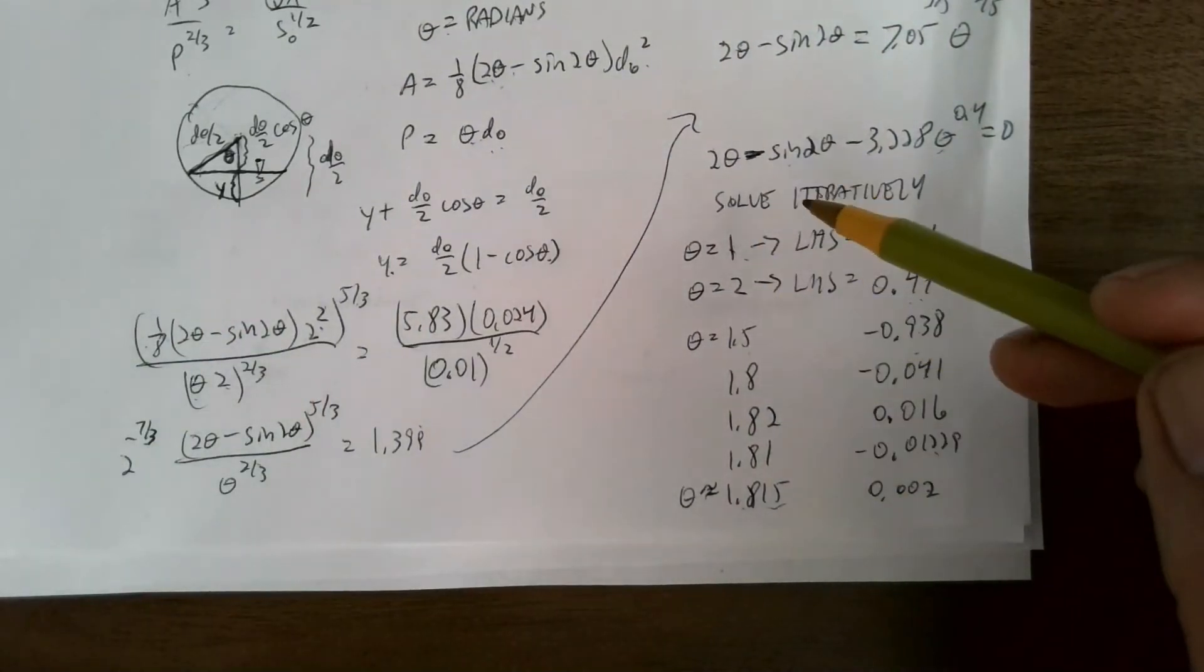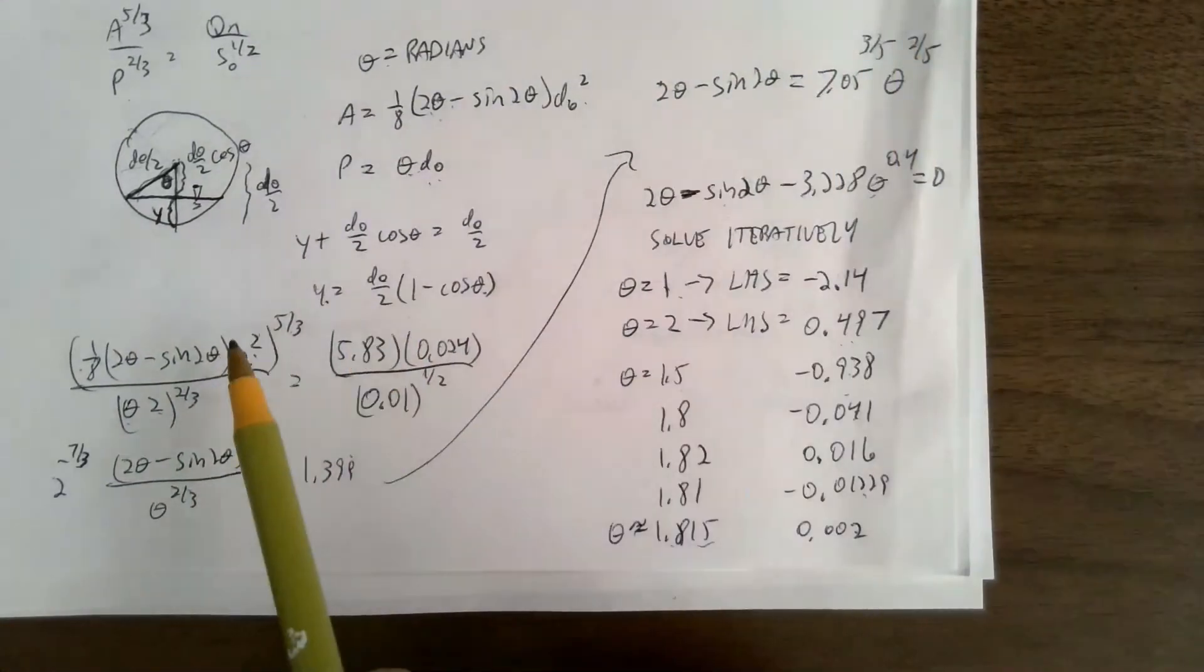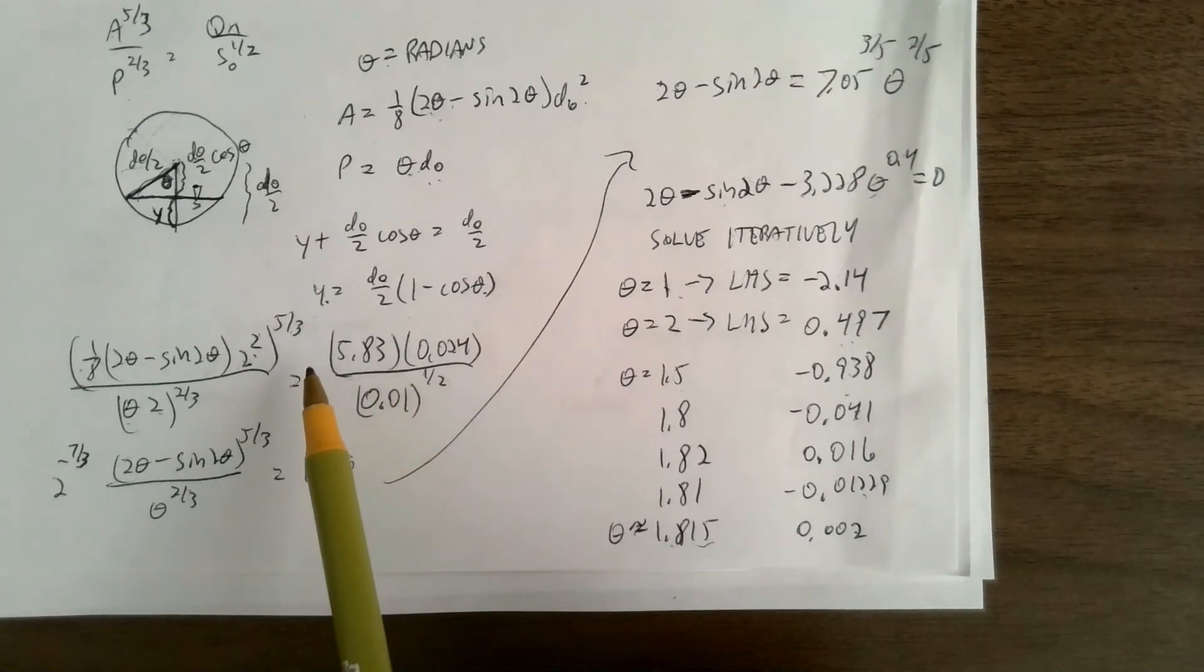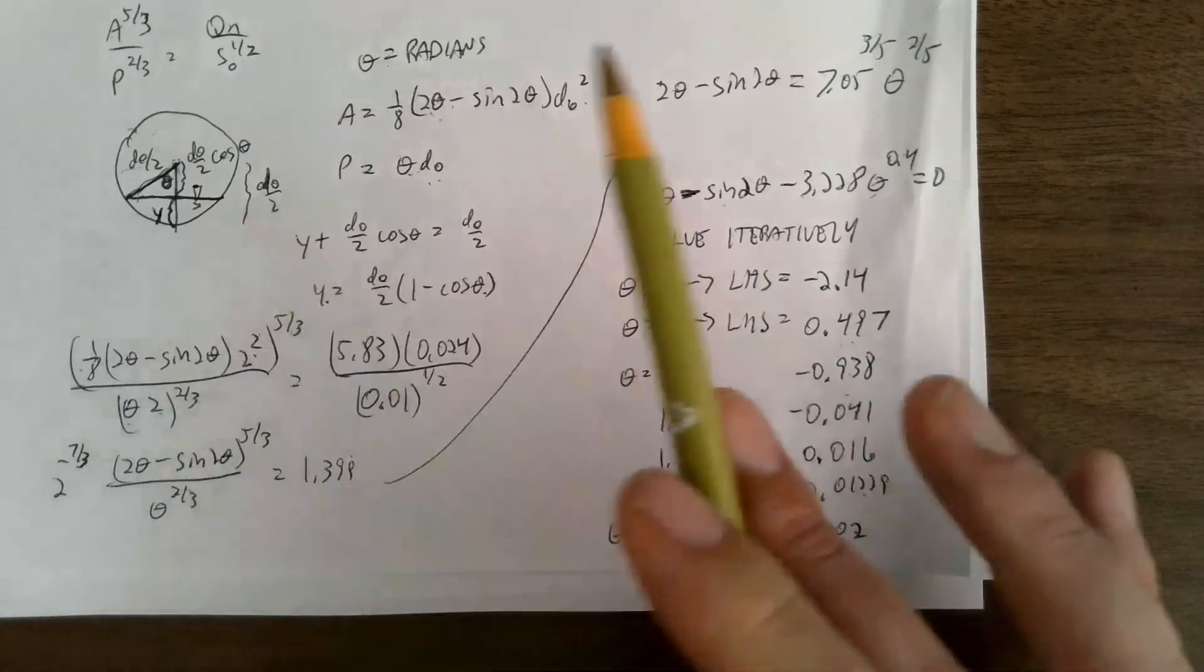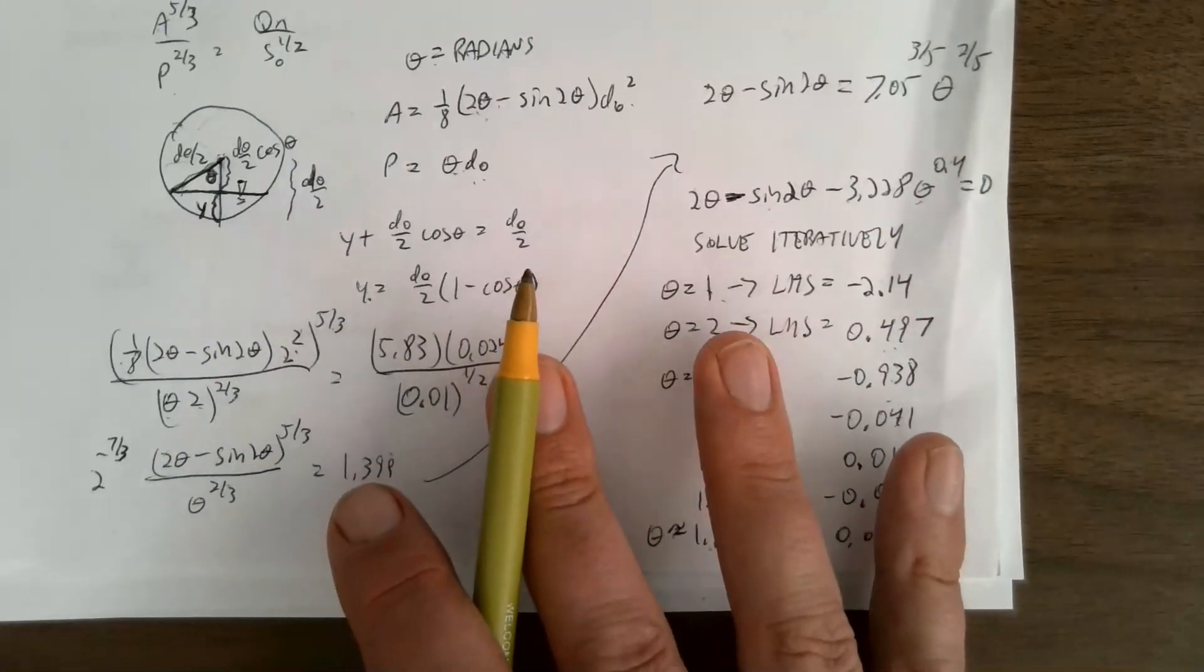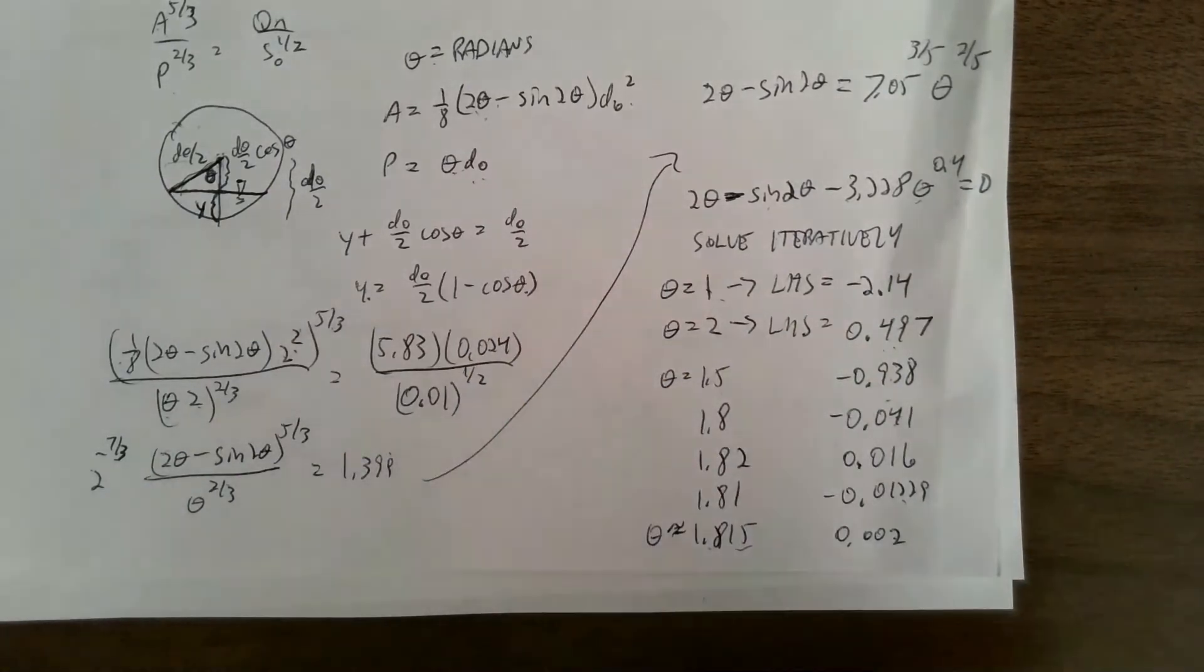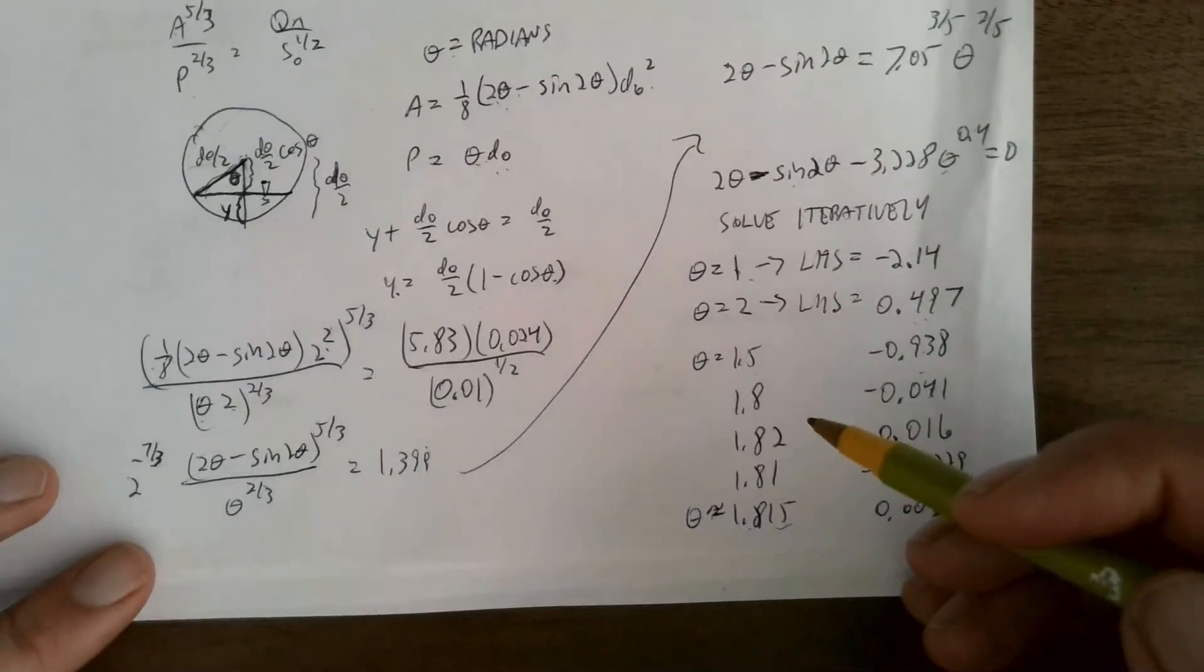This is showing you how you can solve it without a calculator. You could also put this in Excel. And I've done this before in Excel where we solve it with solver to try to figure out the value of theta. You can automate this whole thing. Once you have it set up, you could use a spreadsheet tool like that to then solve any kind of problem with a different diameter or a different length or whatever.